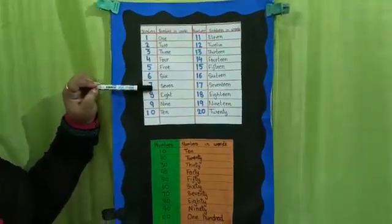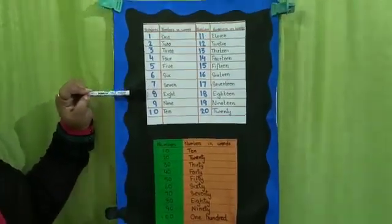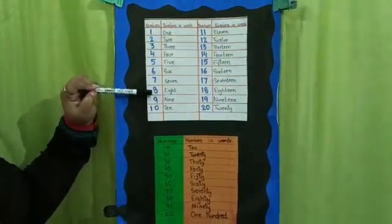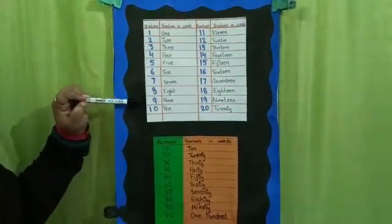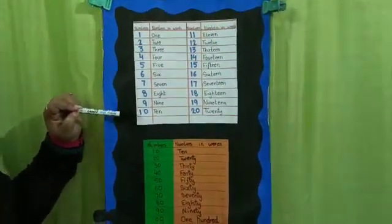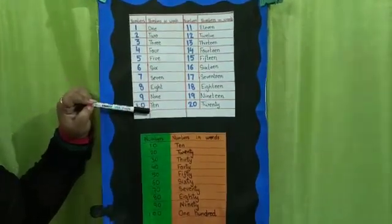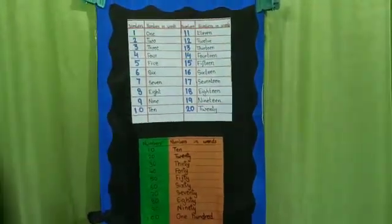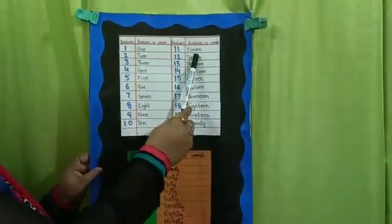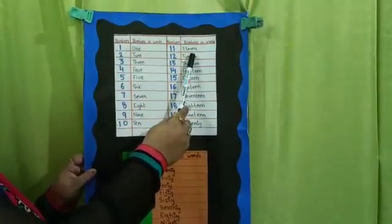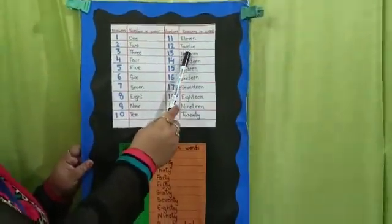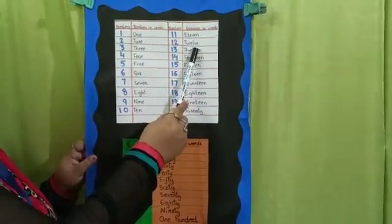SEVEN 7. 8. EIGHT 8. 9. NINE 9. 10. TEN 10. 11. ELEVEN 11. 12. TWELVE 12.